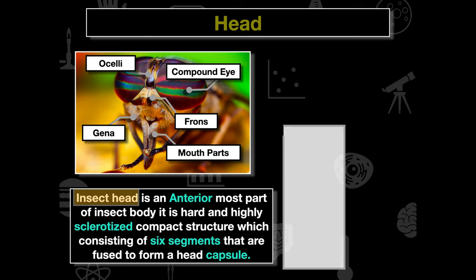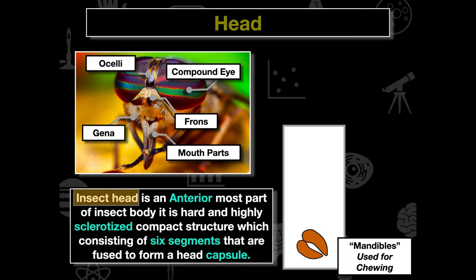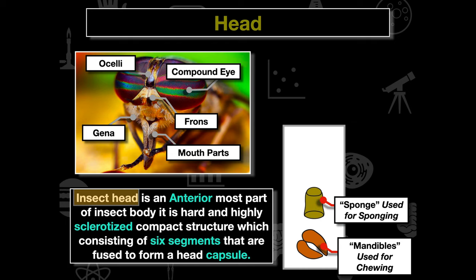Looking at mouthparts, the first type is mandibles, which are primarily used for chewing. The second type is sponges, used for sponging — we generally see these on flies.